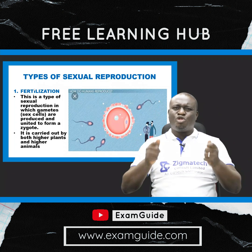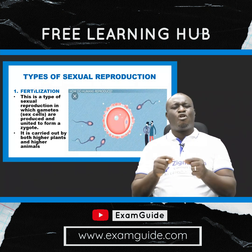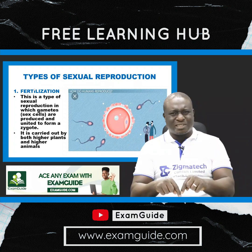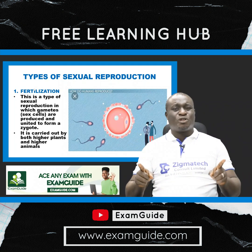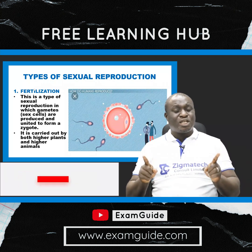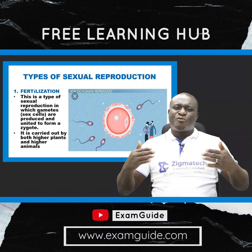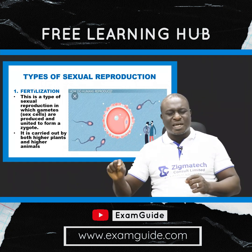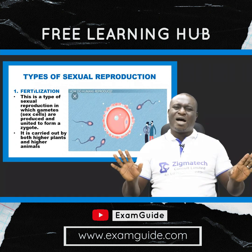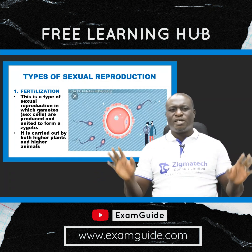What is really important during fertilization is not just the union of these sex cells, but the union of the nucleus in each of these sex cells. Fertilization can be said to have occurred in a living organism — mostly mammals — when the nucleus of the male sex cell fuses with that of the female sex cell. Without the union of these nuclei, there is no formation of a zygote.